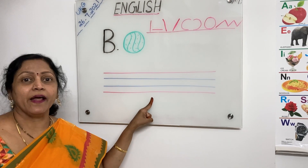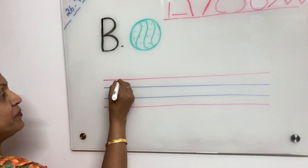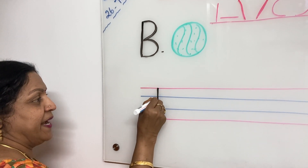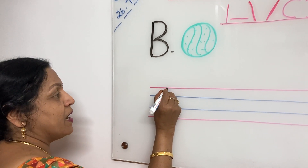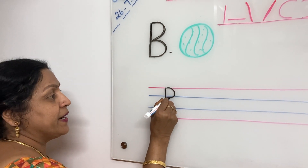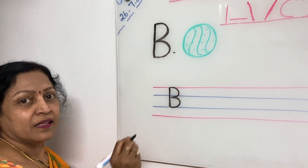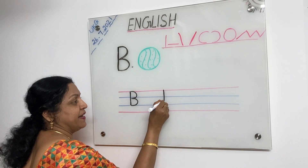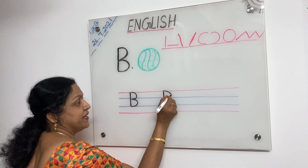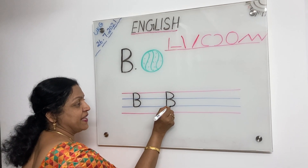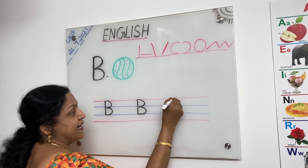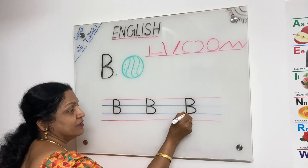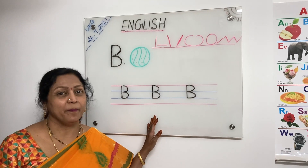Now I will show you how to write on the lines. First stroke from the red line and write a standing line till the blue line. From here draw a right curve like this. From here write another right curve. From here draw one more right curve like this. So this is capital letter B — standing line from the red line to blue line, then curve and one more right curve. That's all. This is capital B.